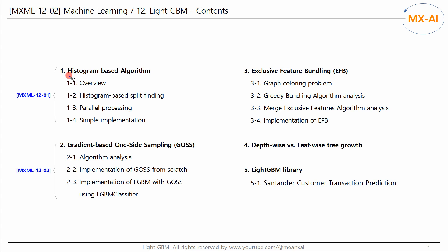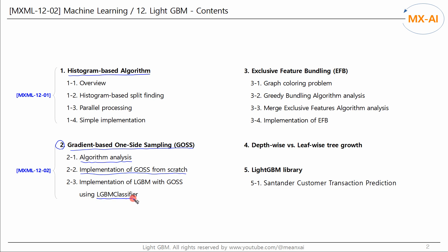In the last video, we looked at the histogram-based algorithm. In this video, we will look at the gradient-based one-side sampling algorithm. We will analyze the algorithm and implement it as code, and also implement LightGBM with GOSS using the LGBM classifier.